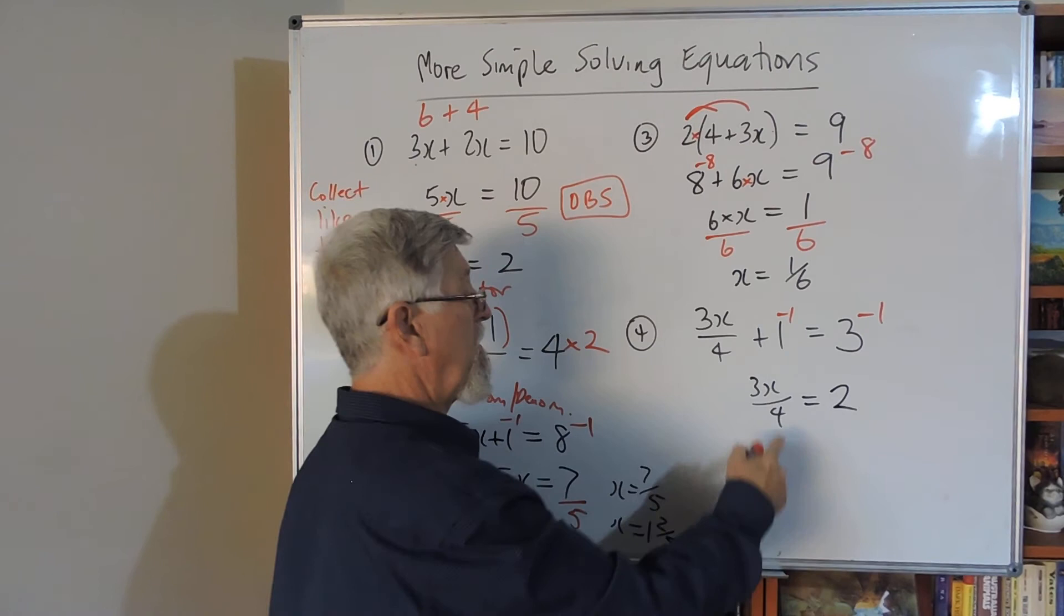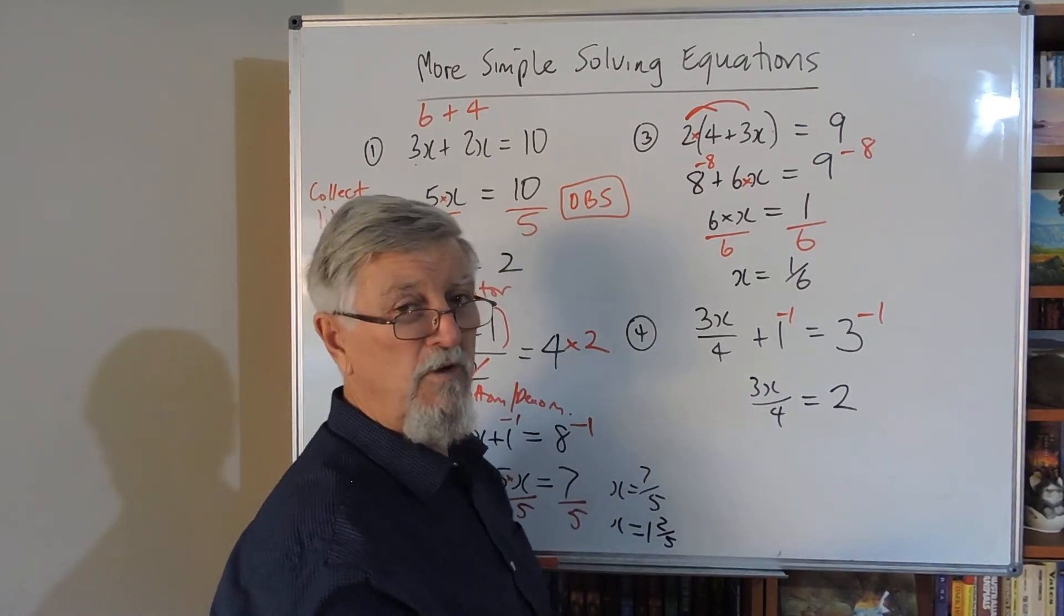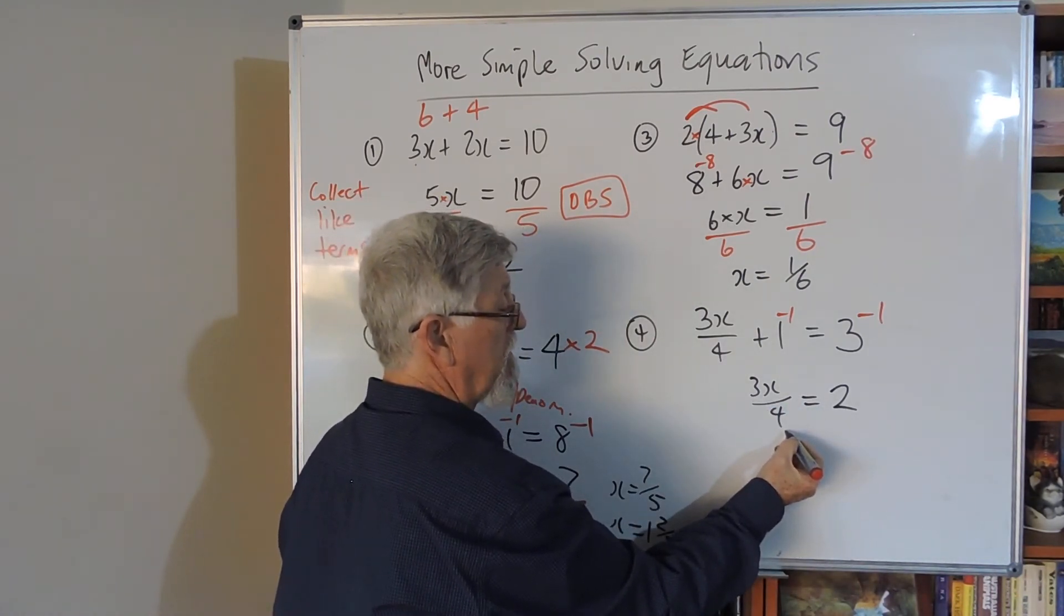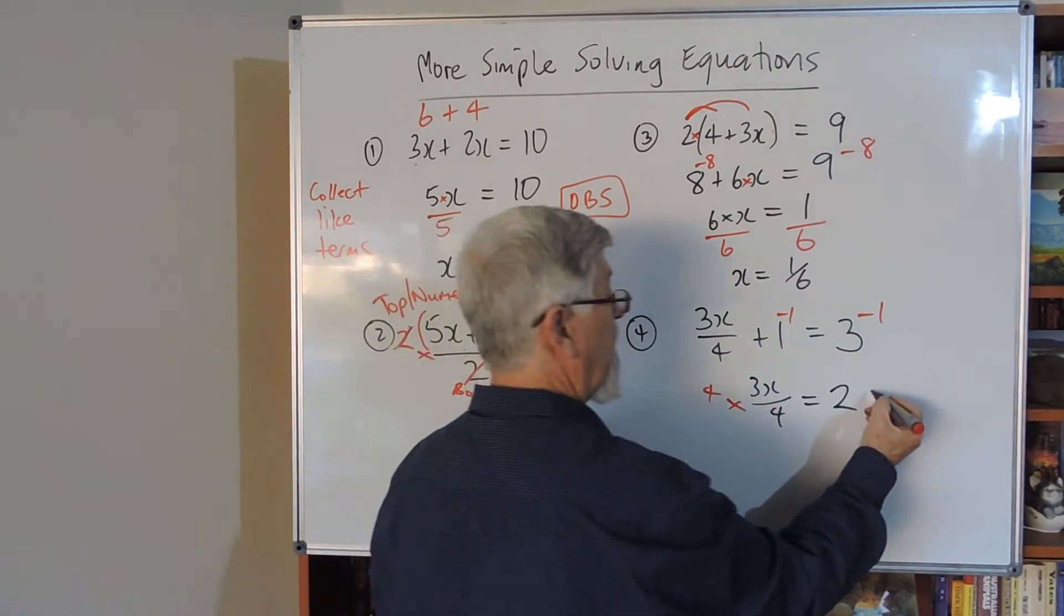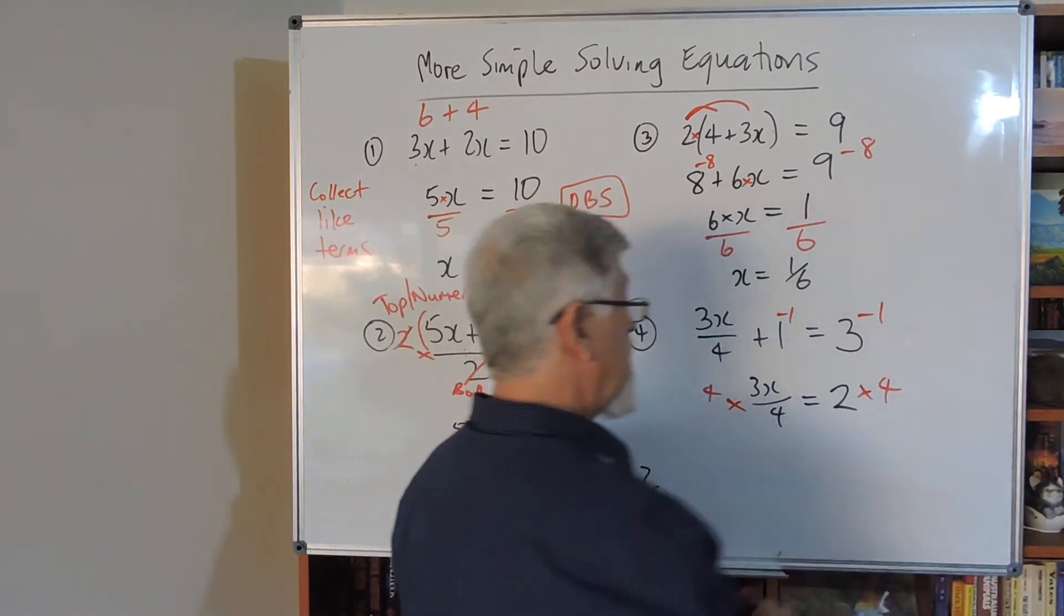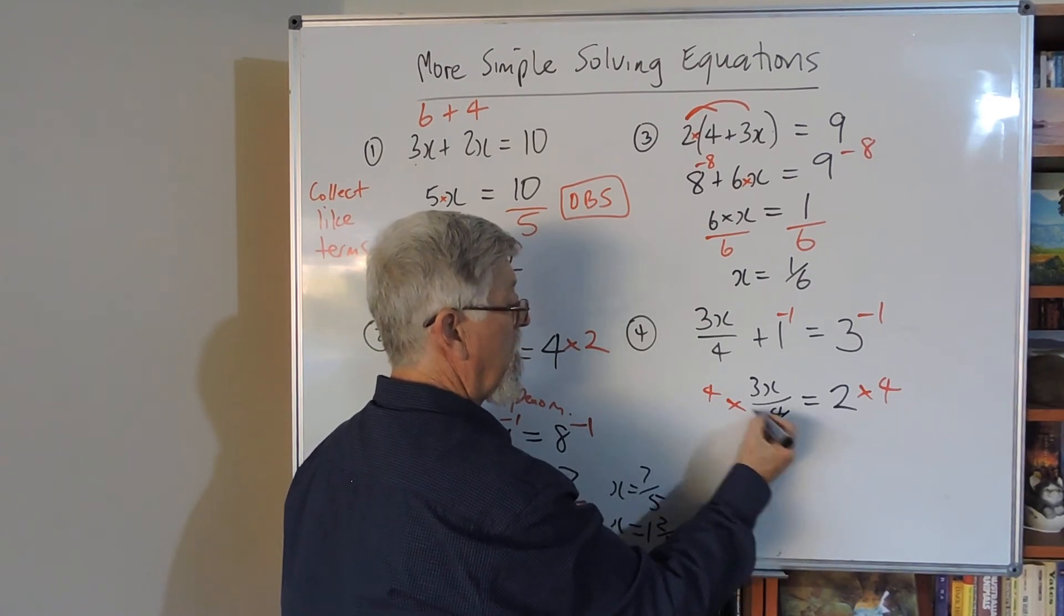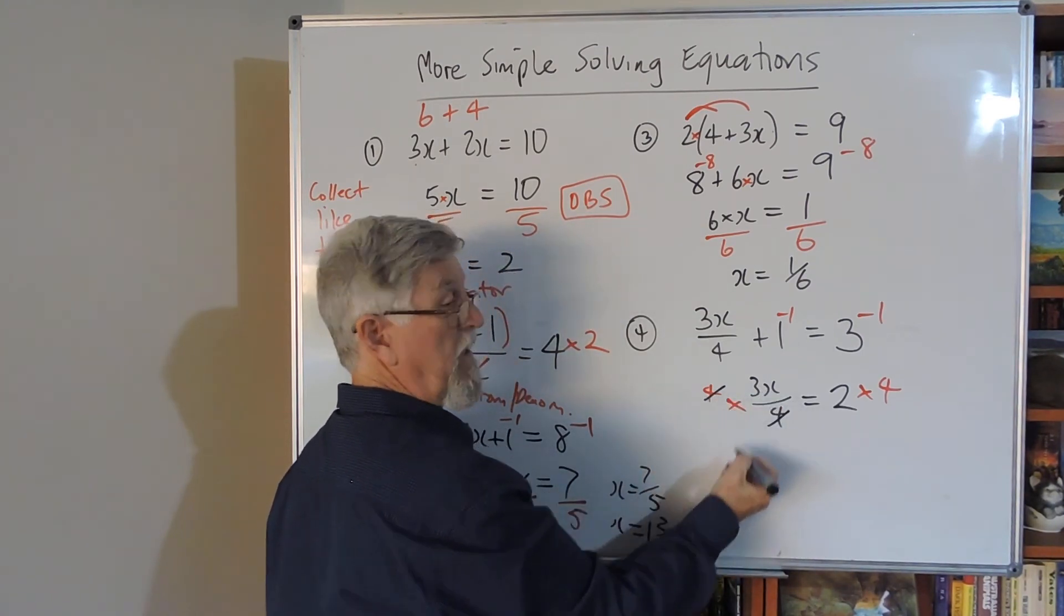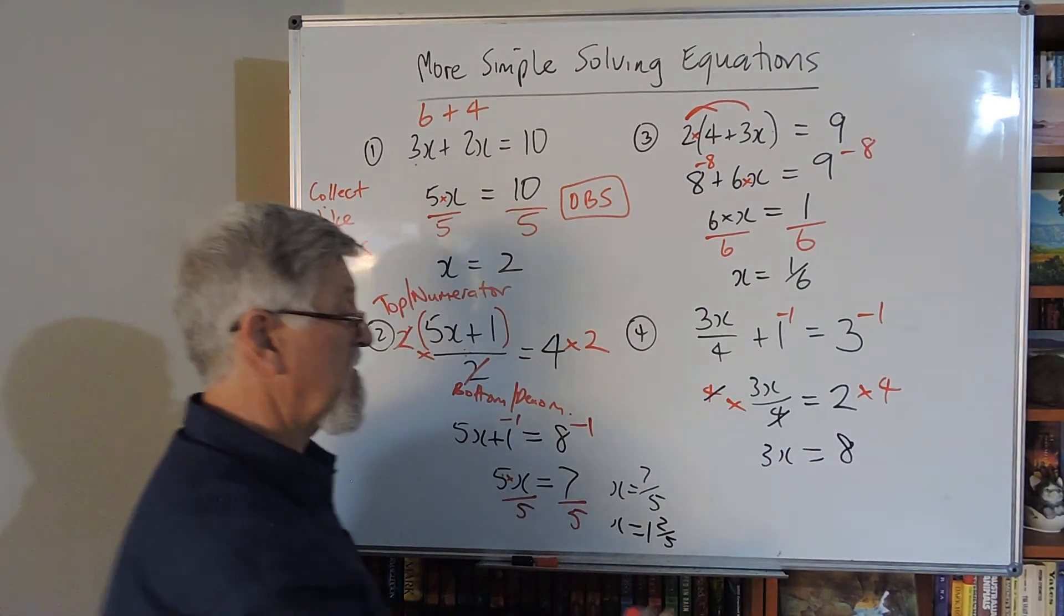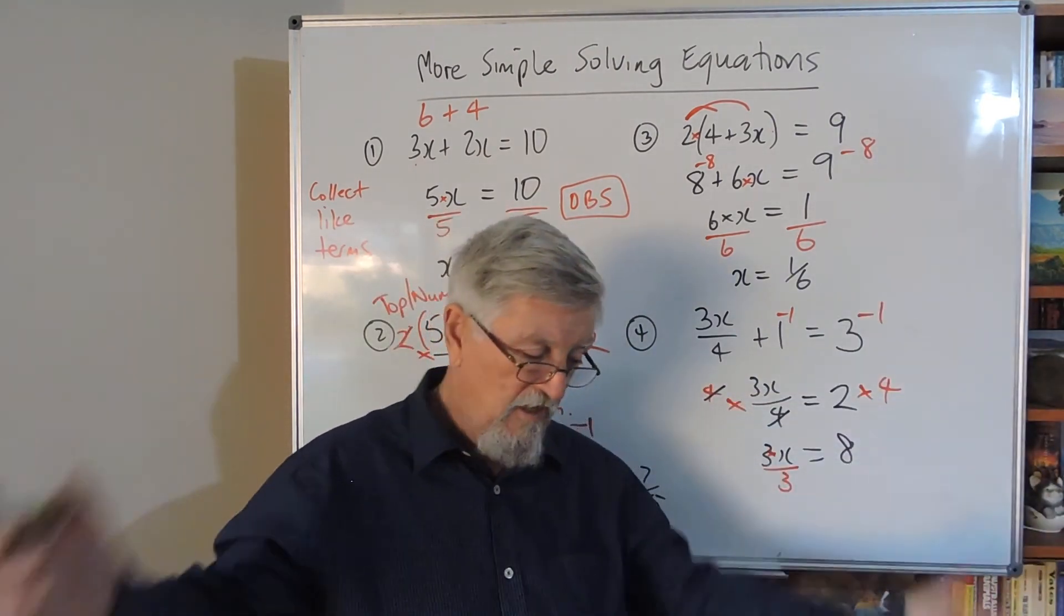When the x is on the top, it's not a great advantage to cross multiply. This says divide by 4, so how can I get rid of that? Multiply by 4 on both sides to balance the scale. Four into four goes once, so I've got 3x = 8. Times by 3 means divide by 3.